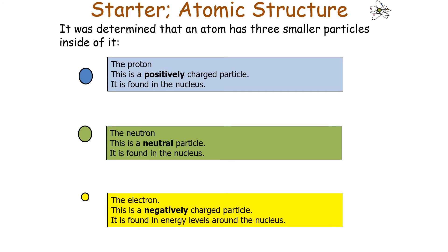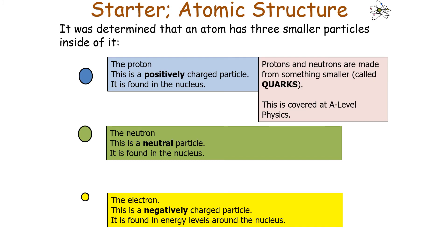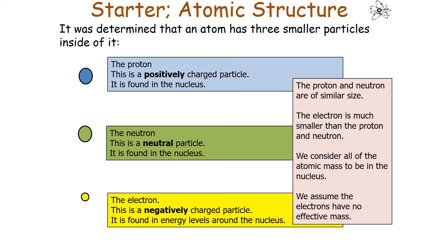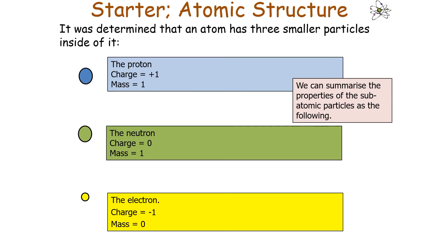Protons and neutrons are made from something smaller called quarks, which is covered at A-level physics. The proton and neutron are of similar size, so the electron is much smaller than both. This means all of the atomic mass is in the nucleus, and we assume the electron has no effective mass. To summarise: the proton has a charge of +1 and a mass of 1; the neutron has a charge of 0 and a mass of 1; and the electron has a charge of −1 and a mass of 0.